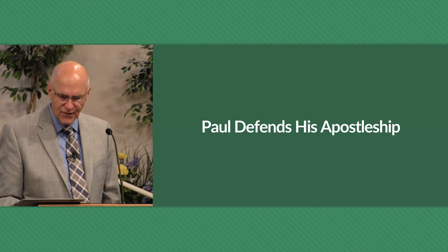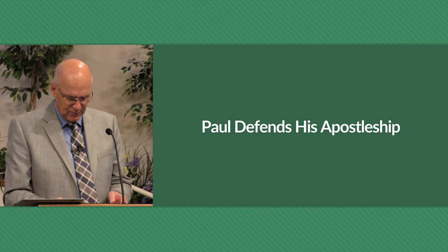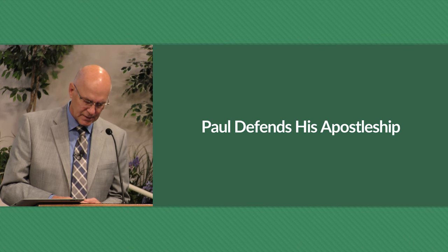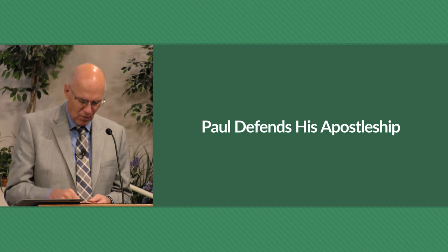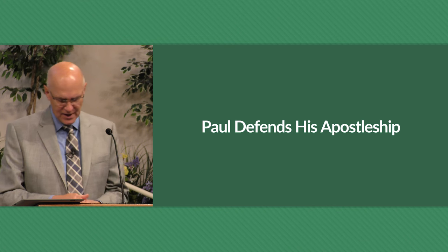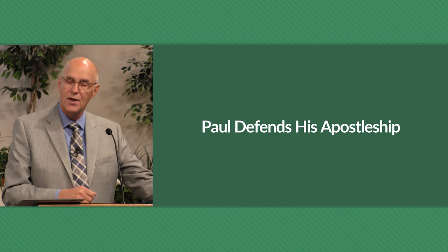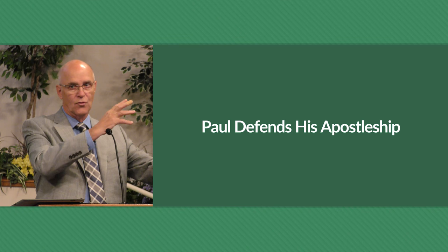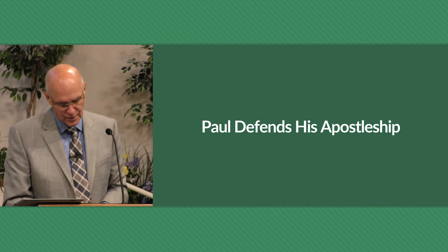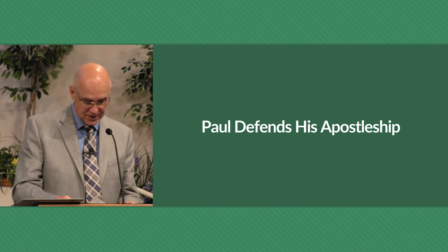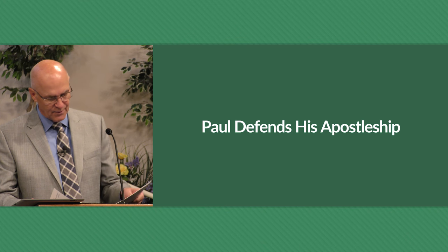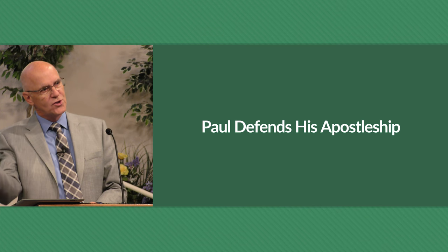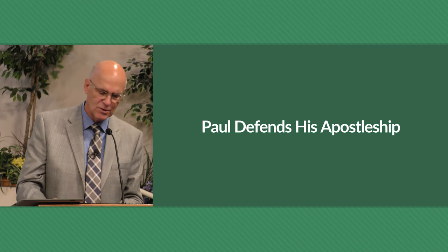Paul begins defending his apostleship. Up to now he has been dealing with problems and questions the Corinthians had concerning his visits and matters within the church. Now he gets personal and goes to the real point — the legitimacy of his own apostleship versus those claiming to be superior to him at Corinth. Some teachers had crept in claiming to be true apostles, super apostles, trying to undercut his authority, discredit him, and sow discord. Unfortunately, the people there were buying into it and questioning Paul's sincerity simply because he had changed his travel plans.